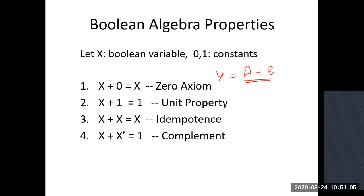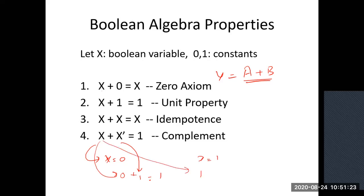You can verify with an example: when X equals zero, zero complement is one, so zero plus one is one. Whatever value of X you take, if they are complements of each other, you will always get one.